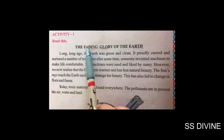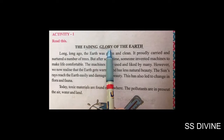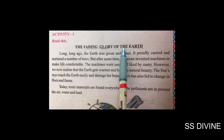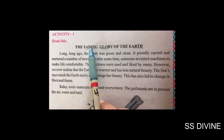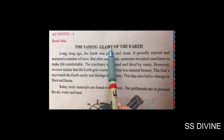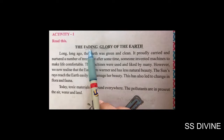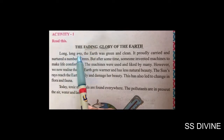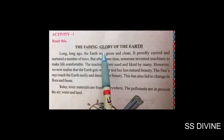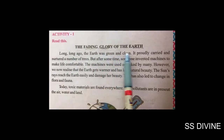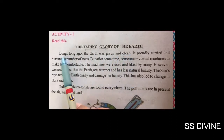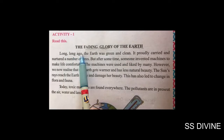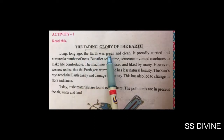Fading का मतलब होता है गुम हो जाना। Glory का मतलब होता है महत्व। Of the Earth — Earth का महत्व गुम हो जाना। Long, long ago, the Earth was green and clean. बहुत बहुत पुराने समय पहले Earth green और clean हुआ करती थी।